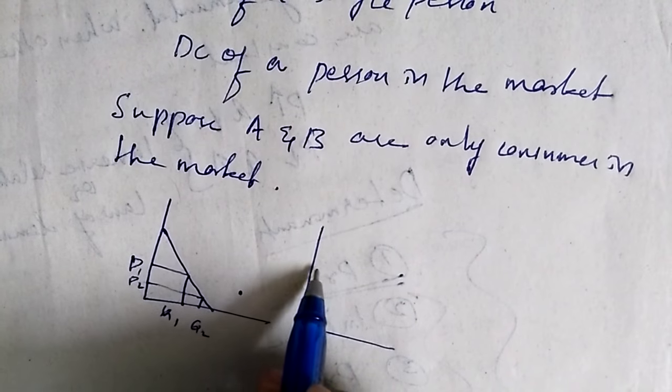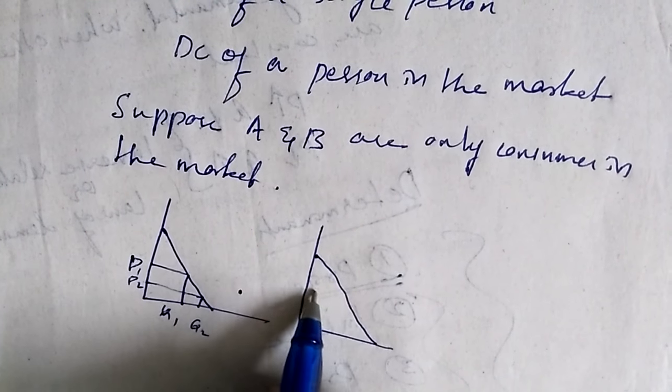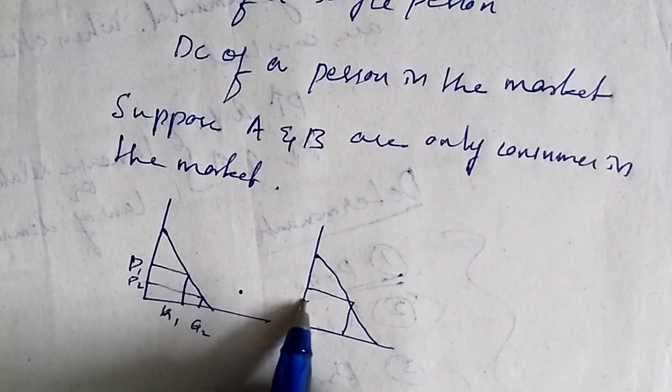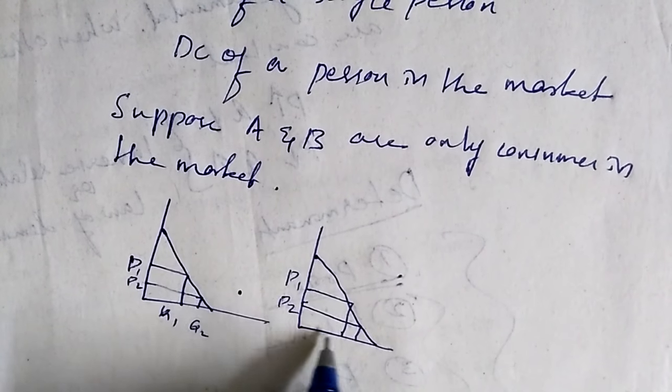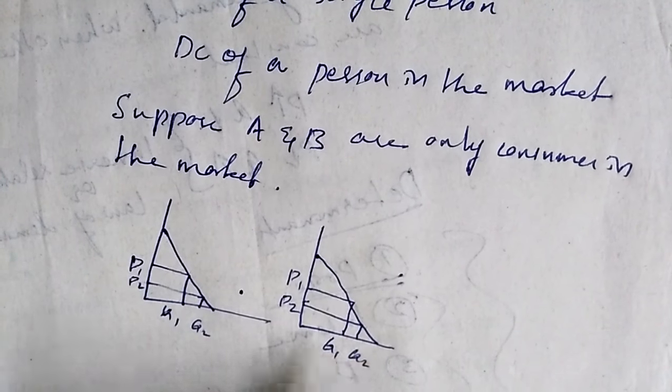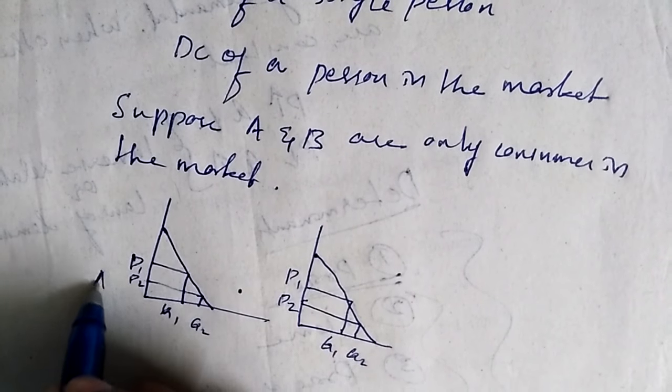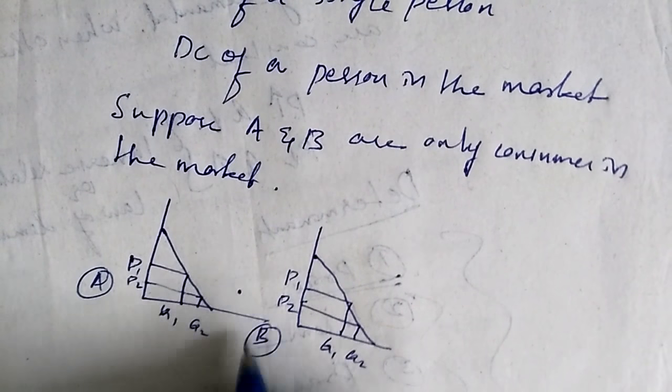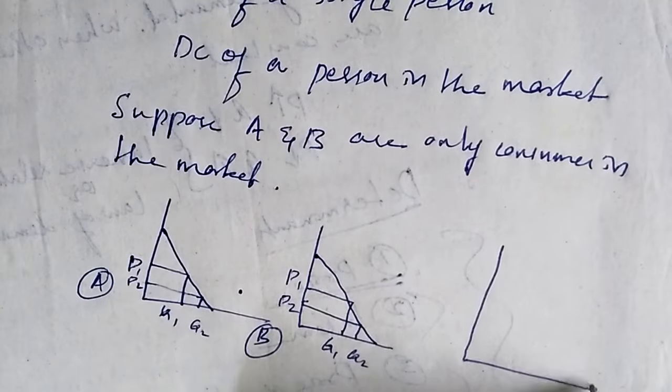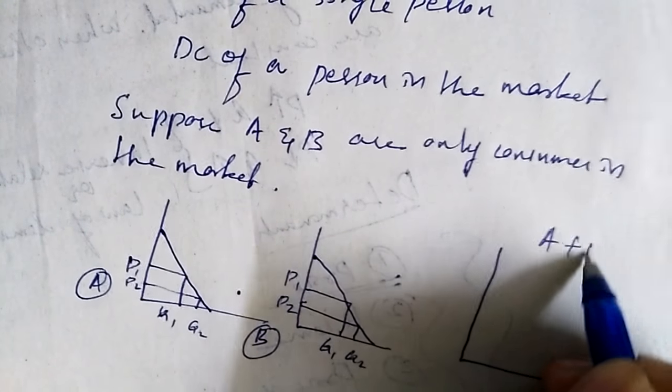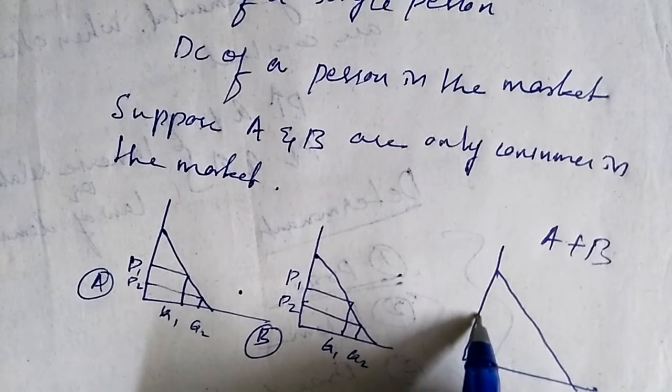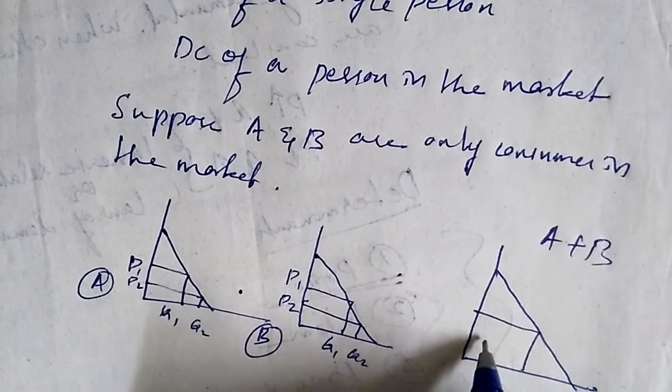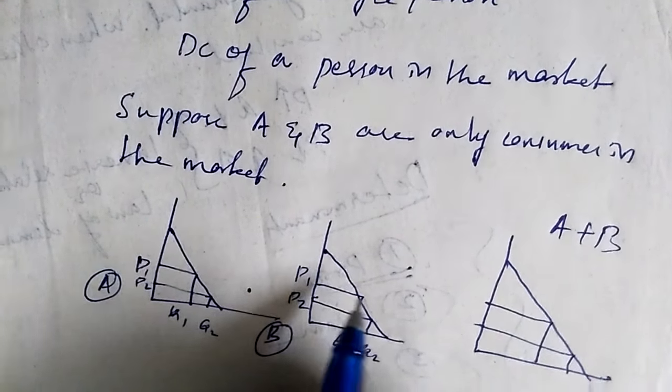is an individual demand curve of B, P1, P2, Q1, Q2. Now the market demand is a combination of A plus B. When you add the demand for both, you will get the market demand.